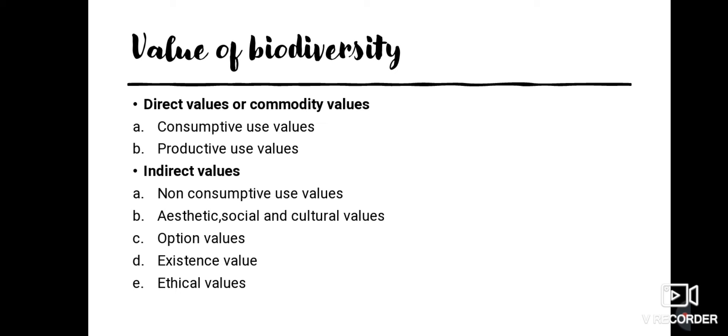Now we can move into biodiversity values — that is, the uses of biodiversity. The first category is direct values, also called commodity values or productive use values. These are values derived from biodiversity that are used directly in the commercial market, such as timber from forests.